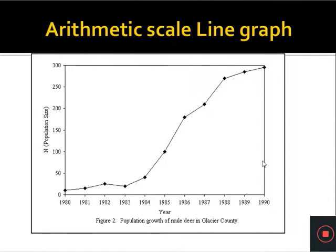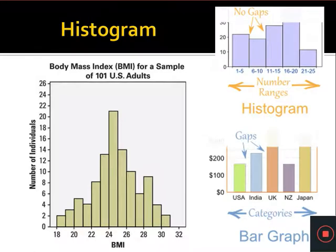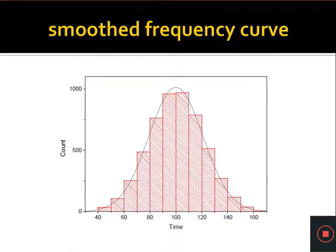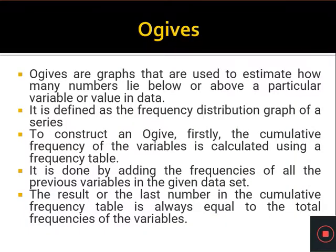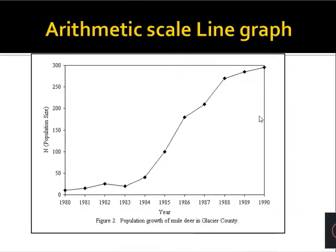The graphs of frequency distribution are of different types: they can be in the form of histograms, frequency polygons, smooth frequency curves, and cumulative frequency curves or ogives. These four are the types of graphs used for representing frequency distribution. First, we will go to the graph of time series or line graphs.